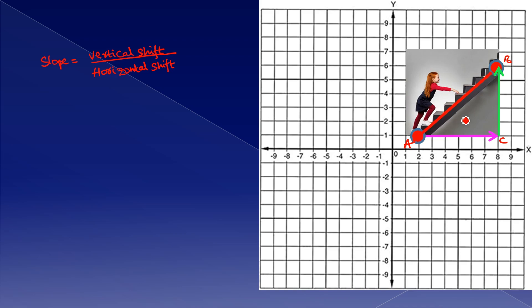And how many units of vertical shift has taken place? 1, 2, 3, 4, and 5. Therefore, the girl moved up by 5 units.